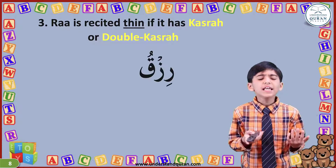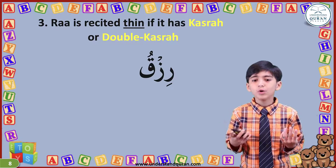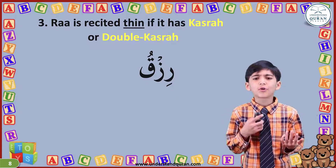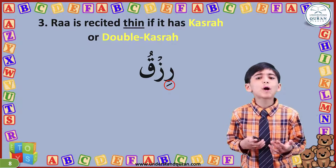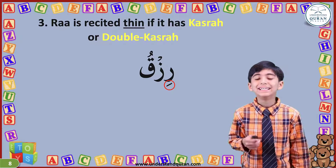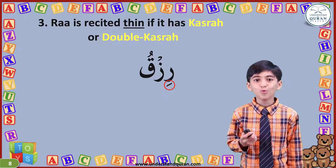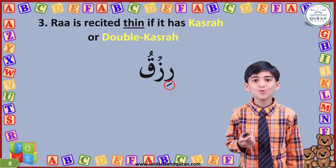Like over here in this rule — this Ra has kasra, that's why we must recite this Ra thin. For example: Rizq.